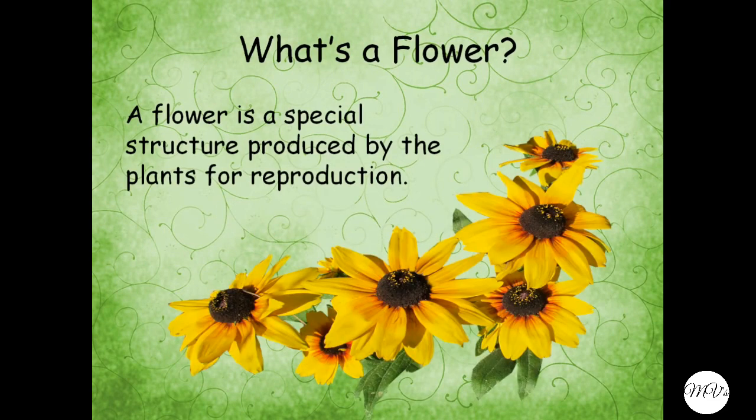Let's see what's a flower. A flower is a special structure produced by the plants for reproduction. What do you mean by reproduction? Production of new offsprings in plants is called reproduction.